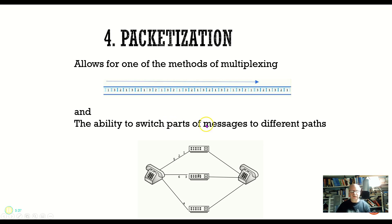It allows for easier multiplexing. So for example, here I've got a wire and I've got packets from three different conversations all going down the same wire. So this does allow for one of the means of multiplexing, and again we're going to talk about multiplexing later in more detail.